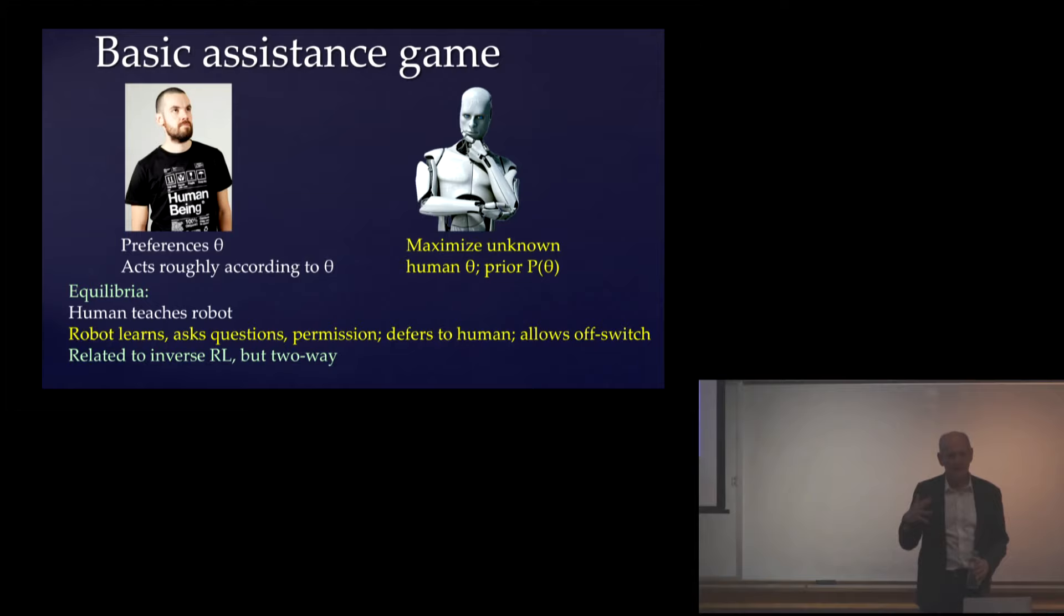Now when the objective is not observed, then mathematically these things remain coupled. They're not conditionally independent. They are only conditionally independent given the objective. So the solutions here all involve a coupling between machines and humans. And this is inevitable. It makes the problem more complicated. You can't go off and solve Markov decision processes as a single agent decision problem. It makes it more complicated but it's unavoidable.